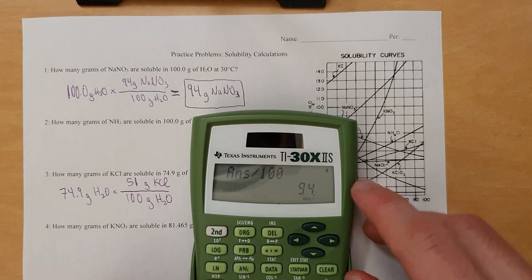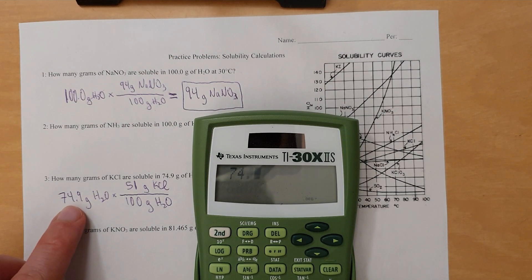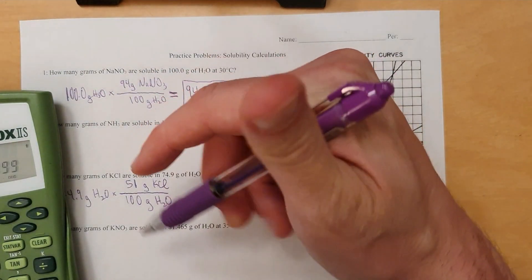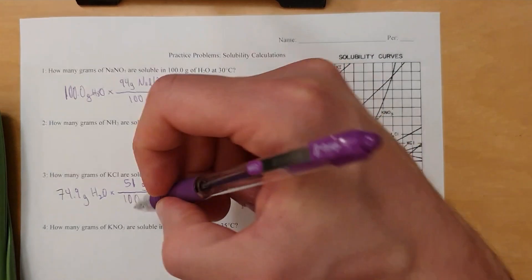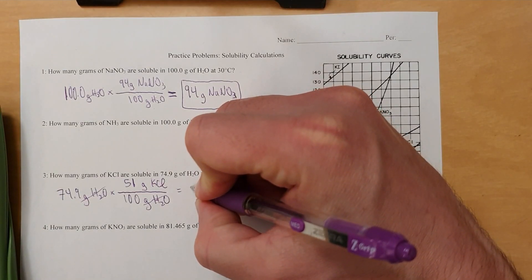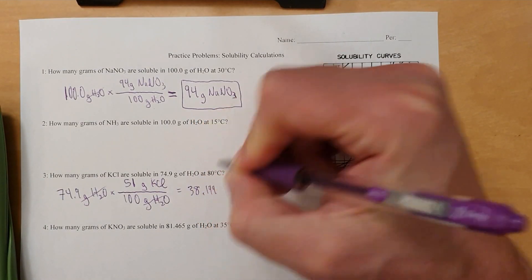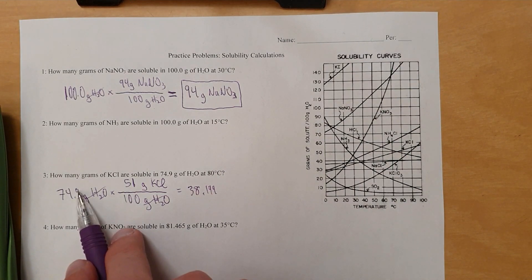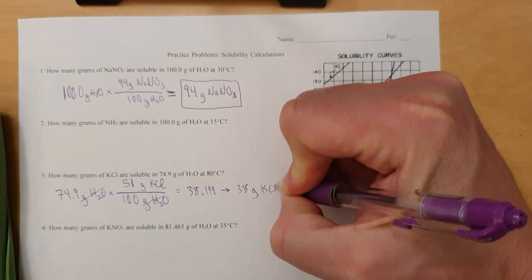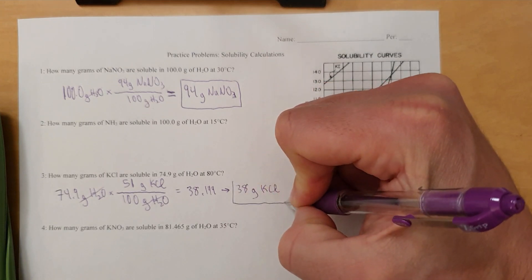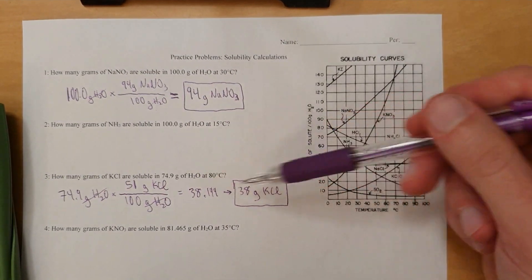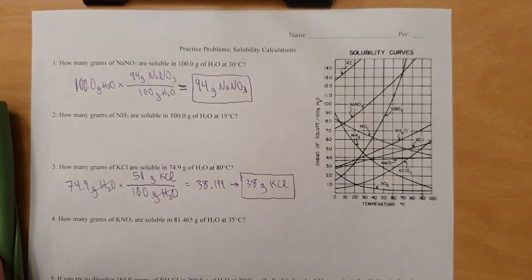So let's actually do that. 74.9 times 51 equals divided by 100 equals that many grams. Now, grams of what? Keep in mind, grams of H2O cancels grams of H2O. What's your units? Grams of potassium chloride. So more specifically, 38.199. Yeah, but don't forget, sig figs, infinite, 3, and 2. So we're going to call it 38 grams of potassium chloride is soluble in this many grams of water at that temperature. Obviously, if you change the temperature or change the amount of water, then this number would change also. All right, so that's how you go about doing that one.